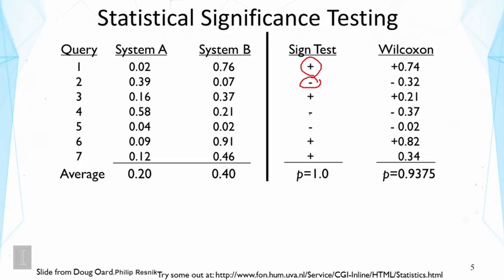Intuitively, this is almost like a random result. If you just randomly flip seven coins and use plus to denote heads and minus to denote tails, that could easily be the outcome. So the fact that the average is larger doesn't tell us anything, and we can't reliably conclude that System B is better. This can be quantitatively measured by a p-value, which basically means the probability that this result is in fact from random fluctuation. In this case, the probability is one — it surely is a random fluctuation.